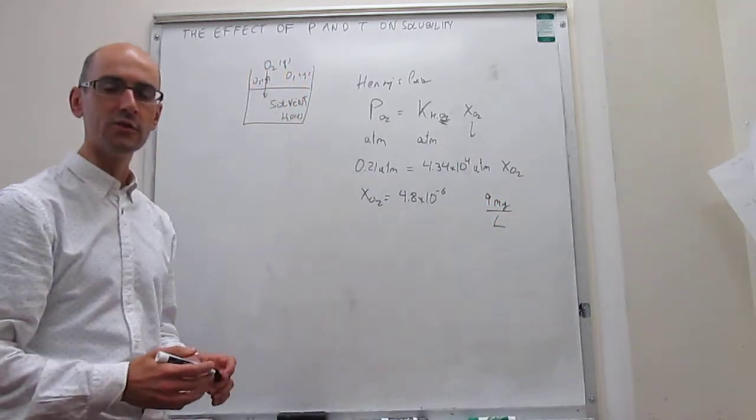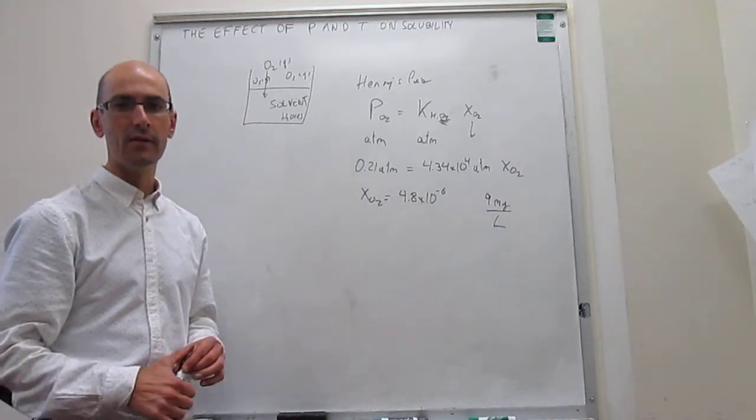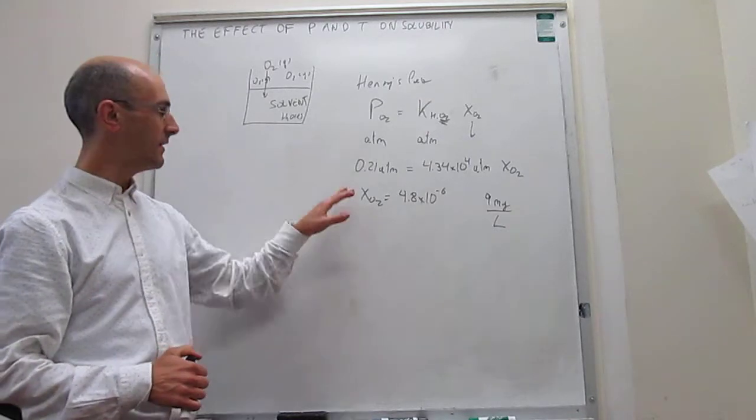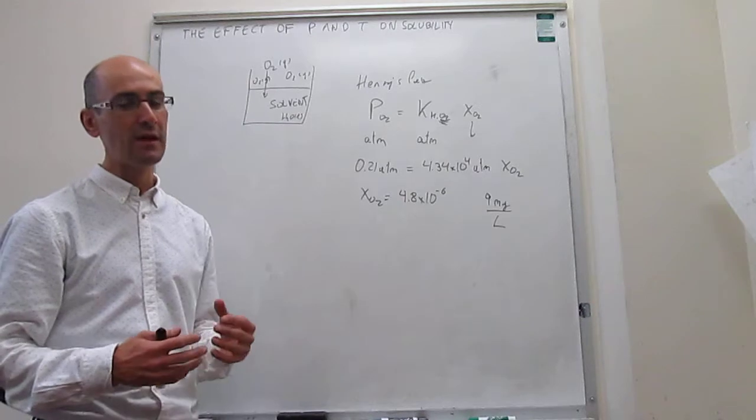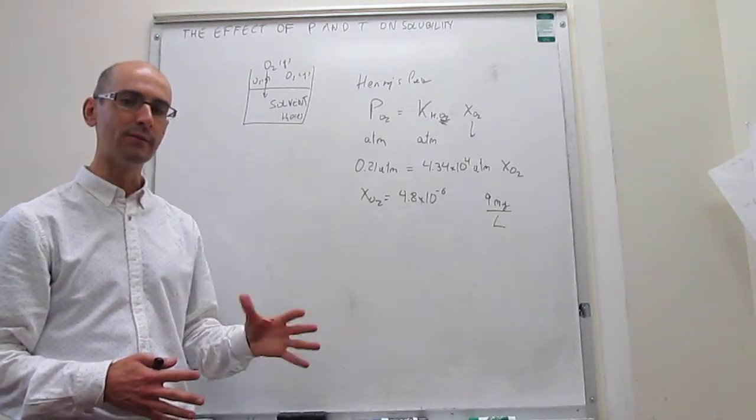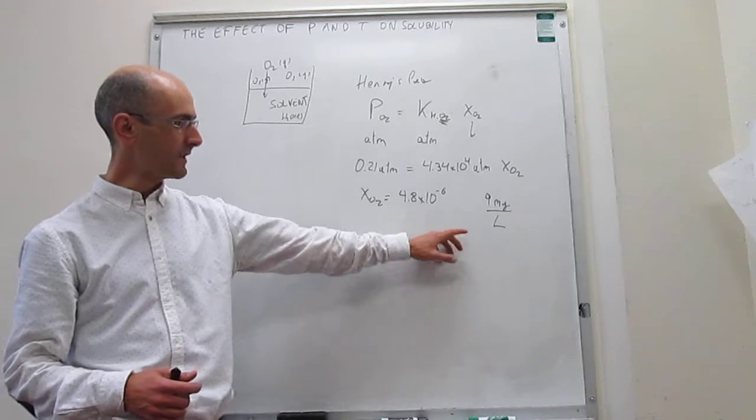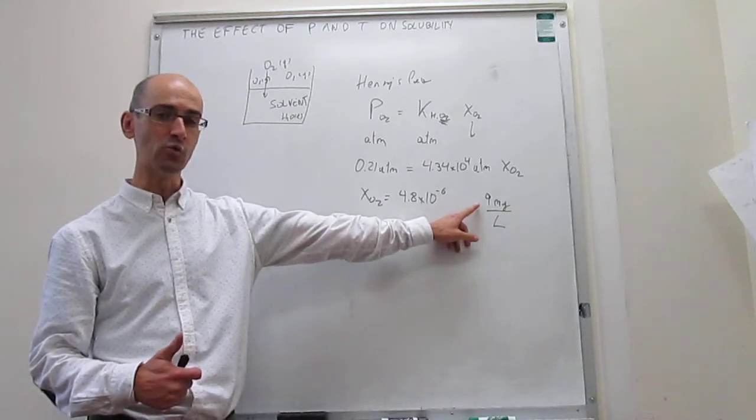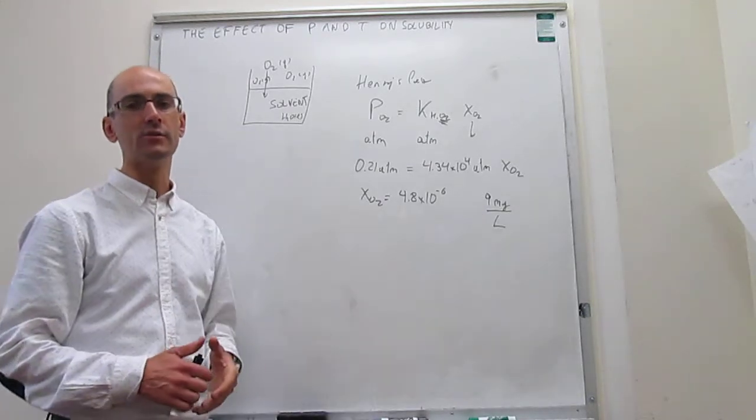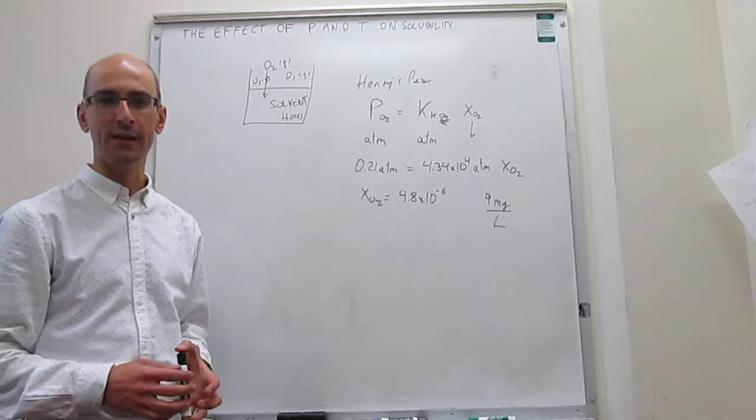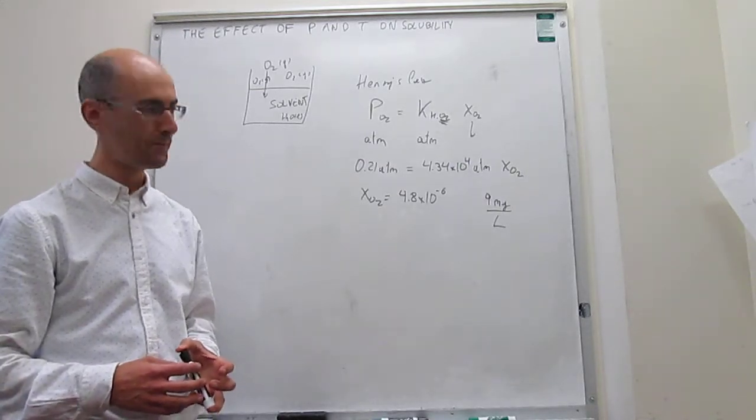That is how much oxygen you would have dissolved in water at 298 Kelvin in Earth's atmosphere. And it turns out that aquatic life only needs about 4 milligrams per liter. So notice that Earth's atmosphere provides almost twice as much oxygen as you need for fish and plants to be able to live underwater.